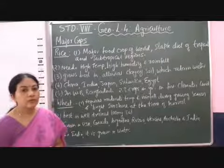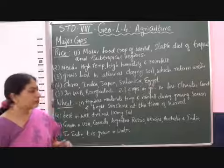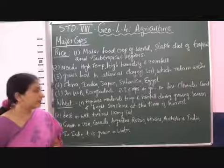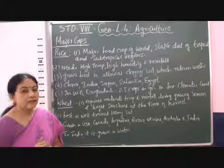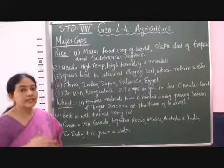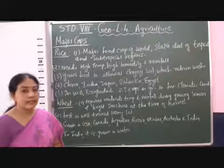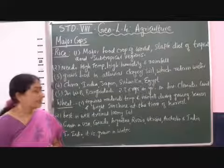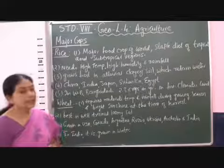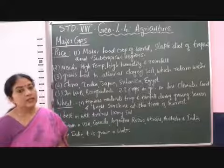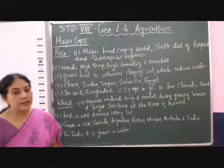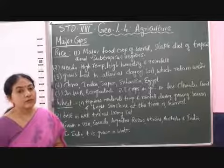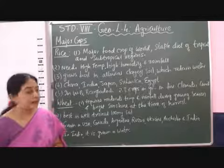Wheat does not require very high rainfall. Moderate rainfall is sufficient during the growing season. However, bright sunshine is required during the time of harvest. That is why it is mostly harvested in the months of March and April.